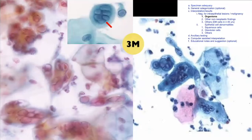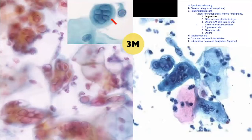Here is a characteristic epithelial abnormality showing multi-nucleation, molding, and margination of the chromatin to the nuclear membrane — the 3M rule: multi-nucleation, margination, and molding. This is very characteristic of Herpes simplex virus (HSV).